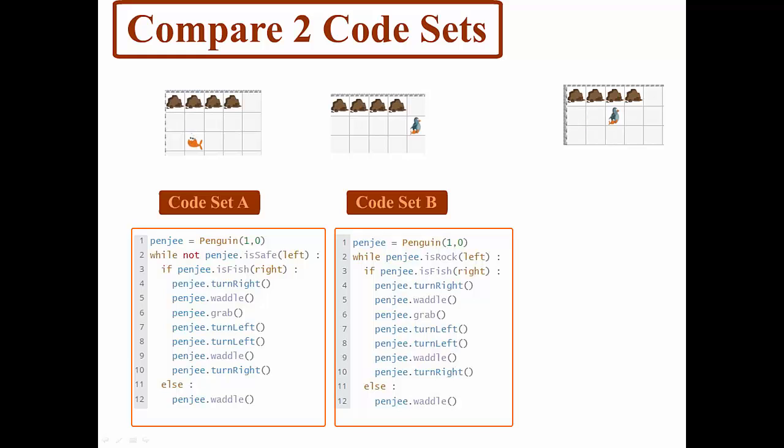As you can see here, we have two different code bodies, A and B, and essentially they're achieving the same thing as shown in the top right corner. However, their while loops have different conditions. In the first, penji.isSafeLeft is a broad one compared to the specific penji.isRockLeft.